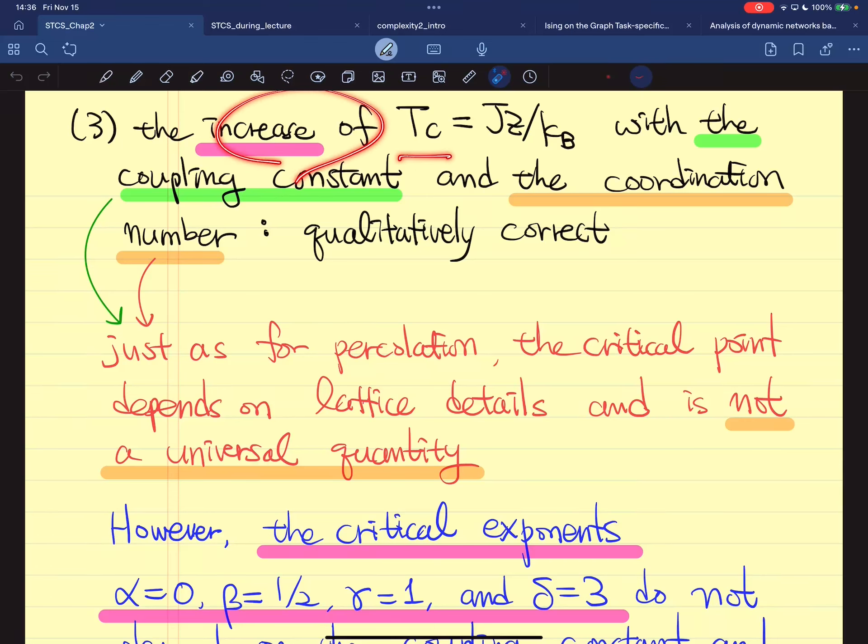This critical temperature actually increases with the coupling constant J and the coordination number, which is intuitive or qualitatively correct, because...